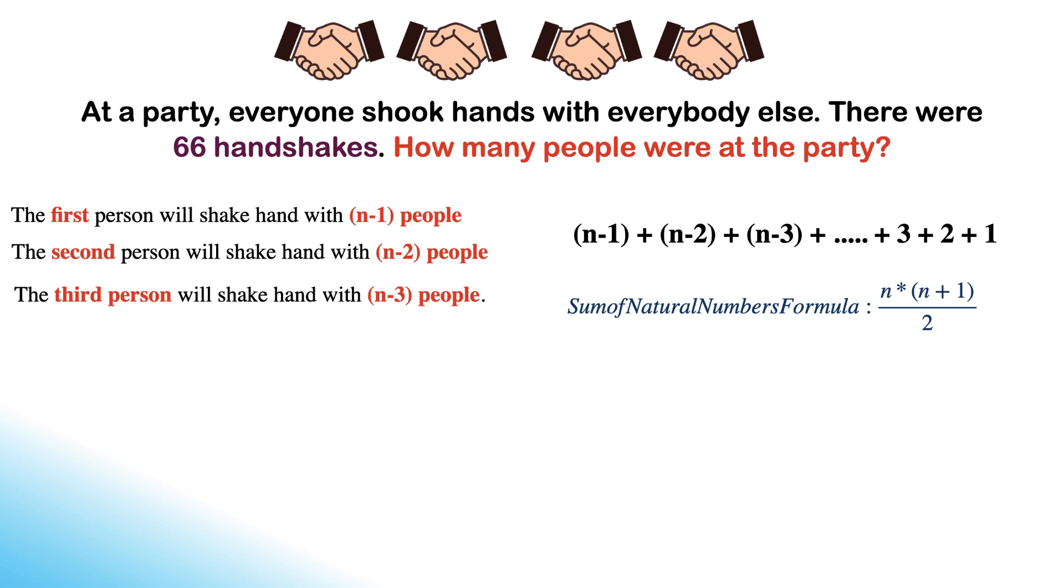The sum of n natural numbers formula is represented like this: n times n plus 1 over 2, where n is the last number.